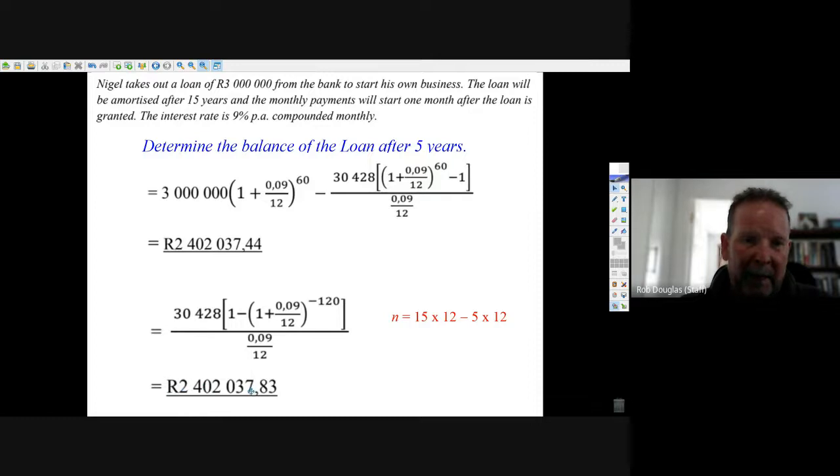We get just about exactly the same answer, a few cents different, 40 cents different, but both ways are acceptable. That's how you determine the outstanding balance after a period of time. That's how it works.